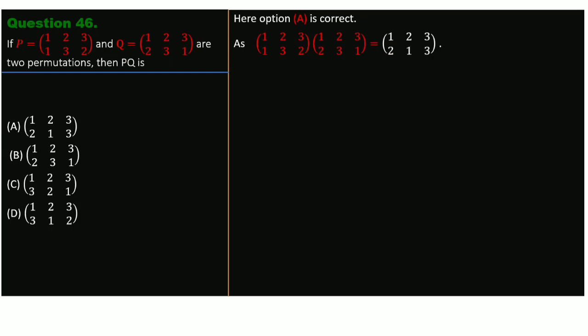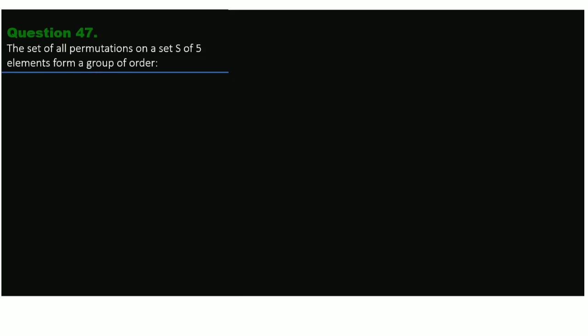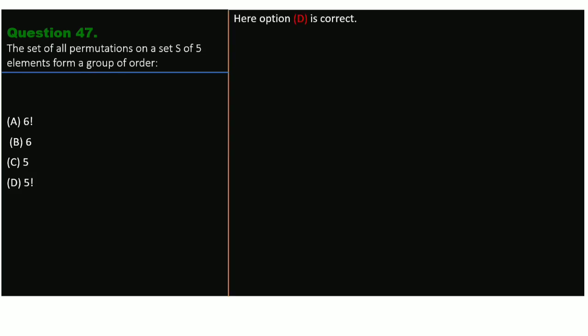Question 47. The set of all permutations on a set S of 5 elements forms a group of what order? Options are 6!, 6, 5, and 5!. The correct option is D, that is 5!. The permutation group Sₙ has order n!. Since S contains 5 elements, S₅ has order 5!.